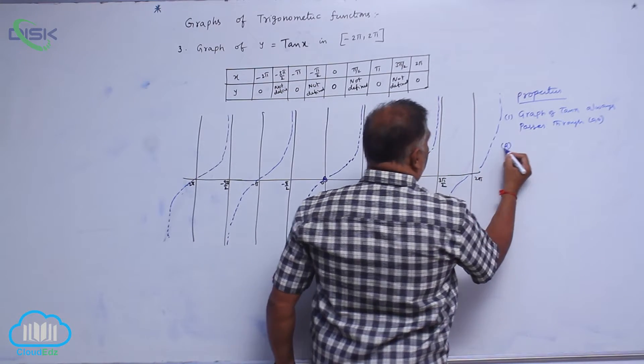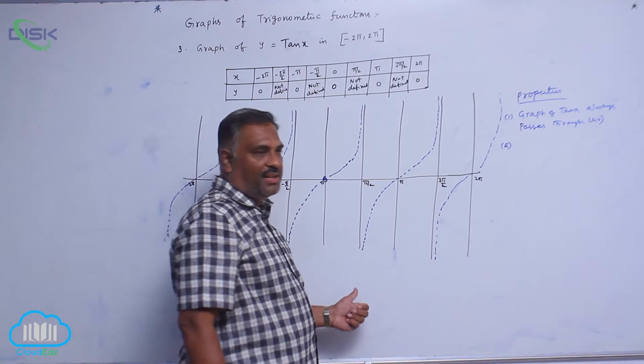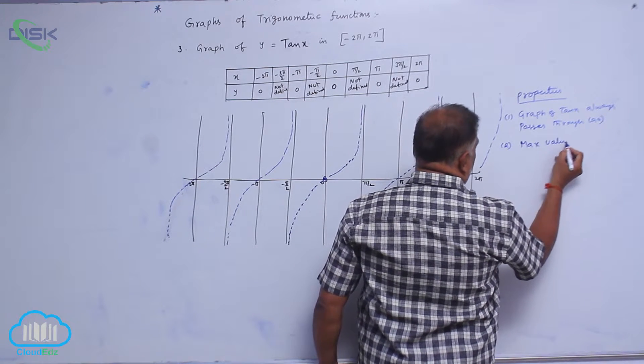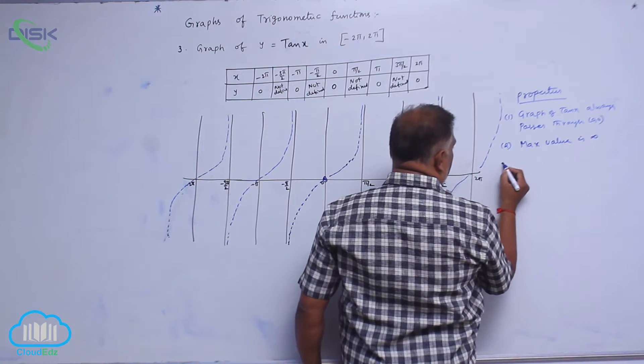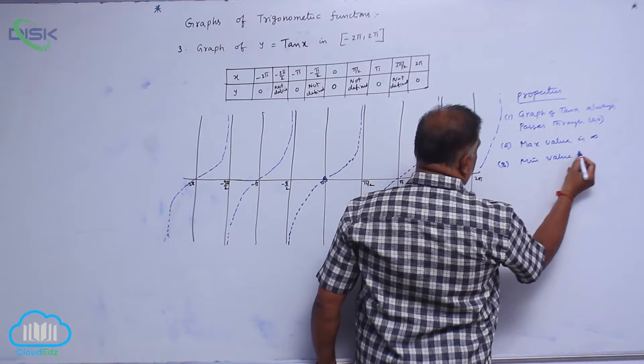Second point: maximum value is going to plus infinity, minimum value is going to minus infinity. So, maximum value is infinity. Number 3: minimum value is minus infinity.